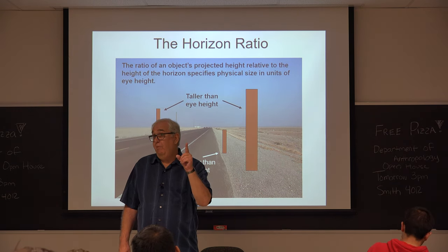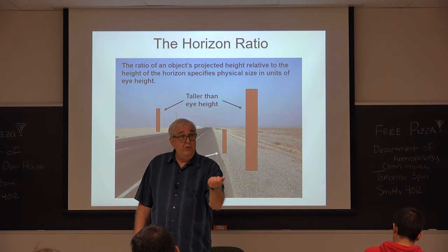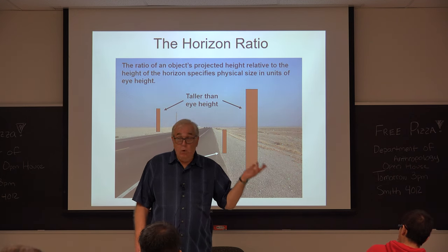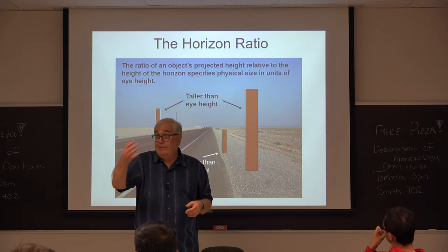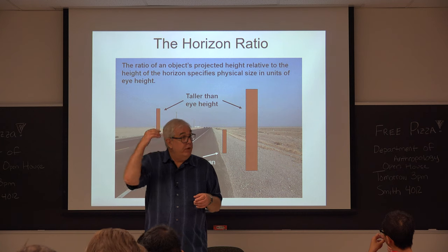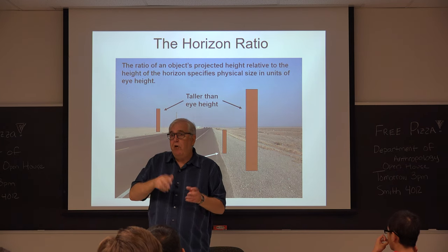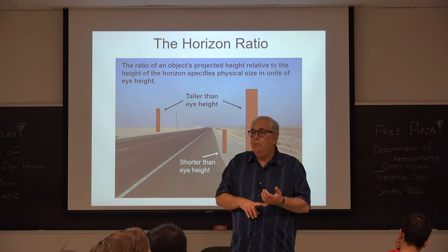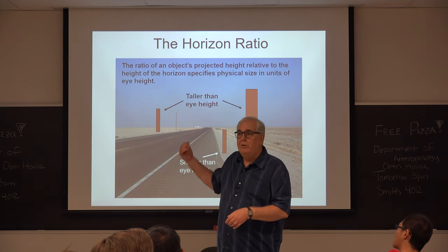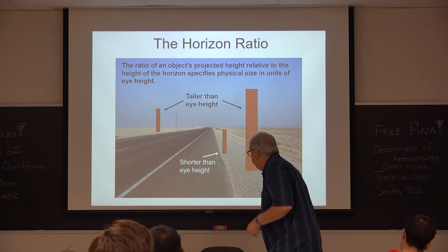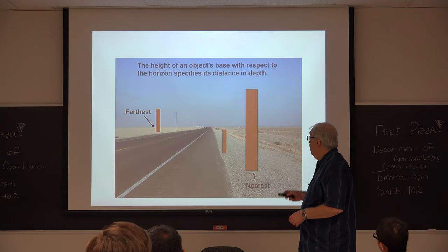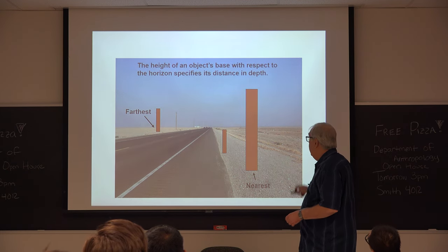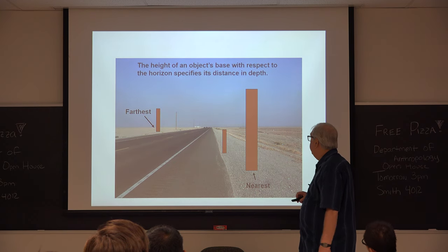Applying that analysis here: the only assumption we're making is that the object is in contact with the ground — that's a pretty robust assumption. We still need to run experiments to test if this is the information people actually use. We'll present models, talk about whether assumptions are reasonable, then look at empirical data to see if people behave the way the model predicts. Which object is farthest? The one whose base is closest to the horizon.